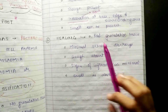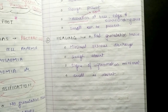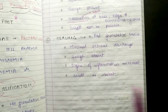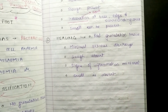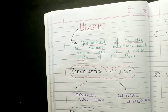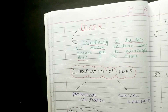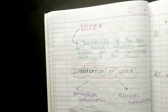In healing ulcer, you will see red granulation tissue. This is all about the classification and introduction of ulcer. In the next video we are going to discuss the parts of the ulcer. Thank you so much for watching.